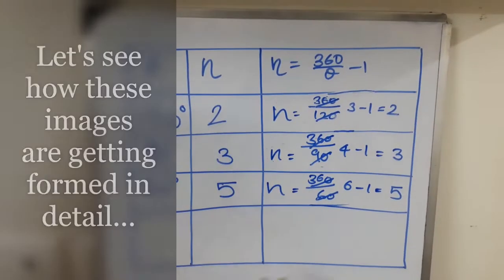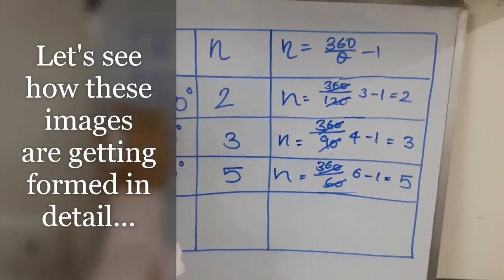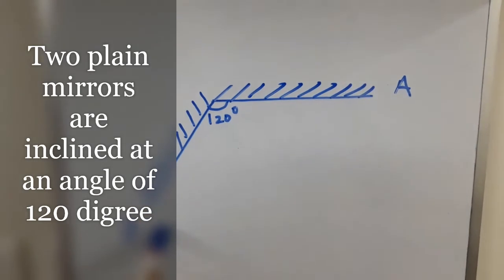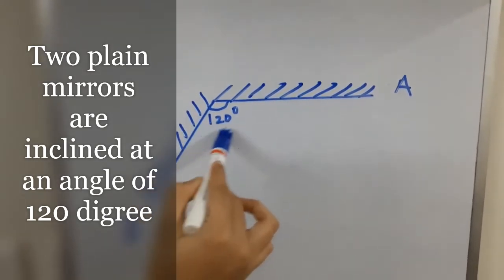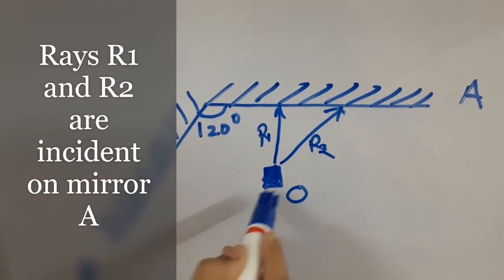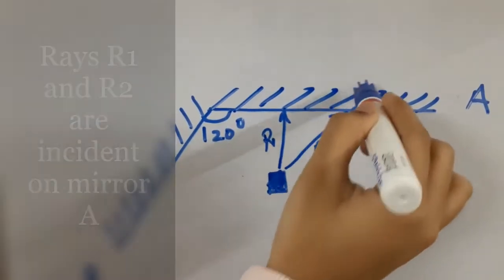Let us see how these images are formed using a ray diagram. Let us take theta as 120. This is mirror A and this is mirror B. They are placed at an angle of 120 degrees. Let us place the object O in front of this mirror. Here the incident rays are R1 and R2.